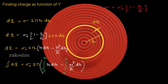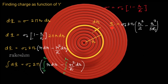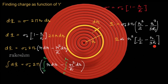Integrating from 0 to r, the charge q as a function of r is sigma_0 * 2*pi * (r²/2 - r³/(3R)). Since sigma_0 and 2*pi are constants, we can write q is proportional to r² * (1/2 - r/(3R)), taking r² outside as a common factor.